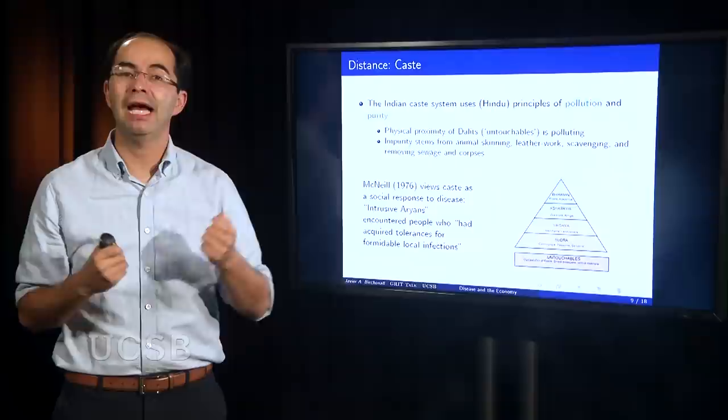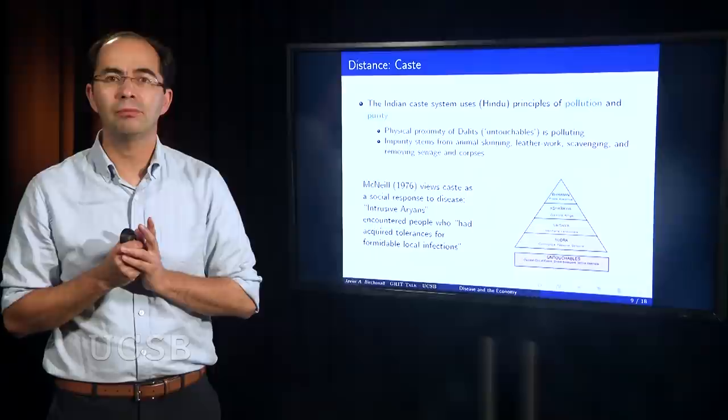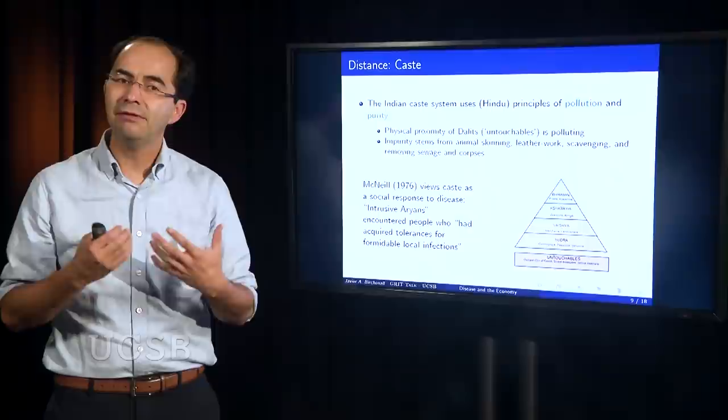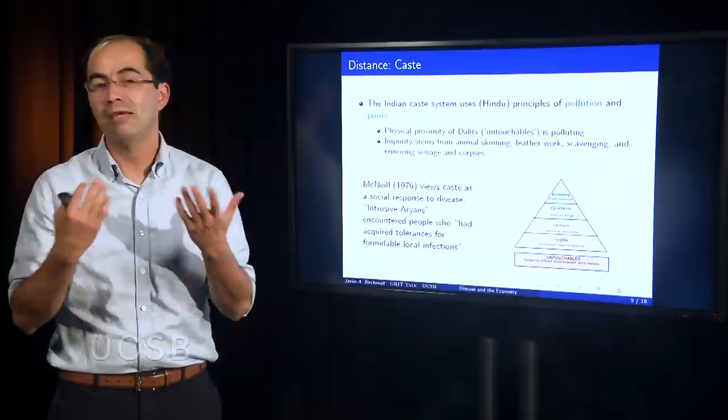Now, this is a system that separates people, separates them along these principles of pollution and purity. And according to McNeil, William McNeil, the historian, this is a system that appears to be a social response to a very different disease environment from migrants in Central Asia. Once migrants got into the Ganges Plains, they encountered a very different world in terms of disease. They did not have the tolerances, the immunity, let's say, to the local infections. The social response, try to separate people and assign them to particular production tasks.